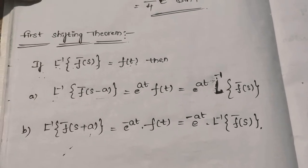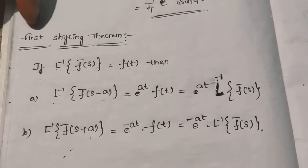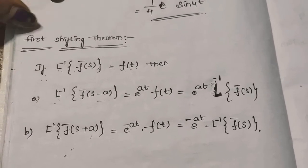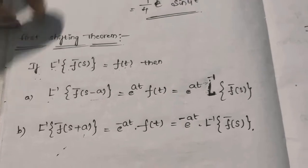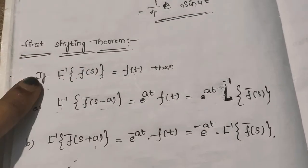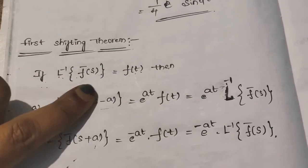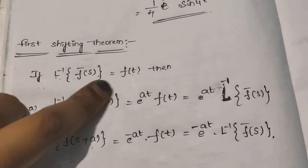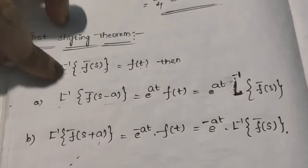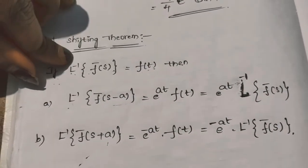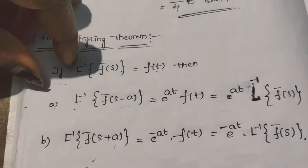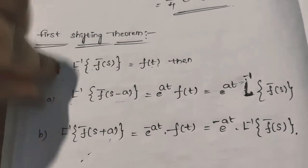Our topic is the property of inverse Laplace transformation. That is the first shifting theorem. If L-inverse of f̄(s) is equal to f(t), this is called the main definition of inverse Laplace transformation.